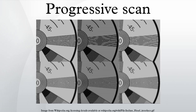Progressive scanning is a way of displaying, storing, or transmitting moving images in which all the lines of each frame are drawn in sequence. This is in contrast to interlaced video used in traditional analog television systems, where only the odd lines, then the even lines of each frame are drawn alternately, so that only half the number of actual image frames are used to produce video.